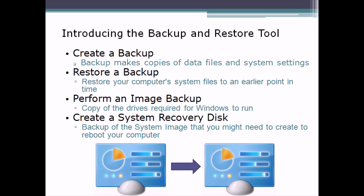If you have some older drives that aren't formatted with NTFS, the backup won't do it — it doesn't like FAT32, it only wants to back up NTFS. Does that mean you're out of luck? Absolutely not. You can do an image backup, which basically copies the drives from sector zero all the way through.